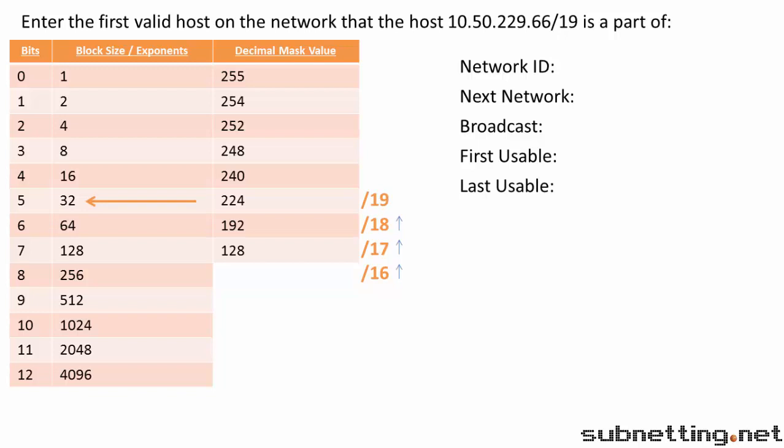Looking at our third octet of our IP address, we have 229. So that means we need to find the highest multiple of 32 that is lower than 229. You can count by 32 until you find it, or you can divide 229 by 32, which is 7-point-something. We don't care about the remainder, only the 7. So we take 32 and multiply it by 7 to get 224. Now we have the highest multiple of 32 that is lower than 229, so we can plug 224 into our third octet for the start of our network. Our network ID is 10.50.224.0.